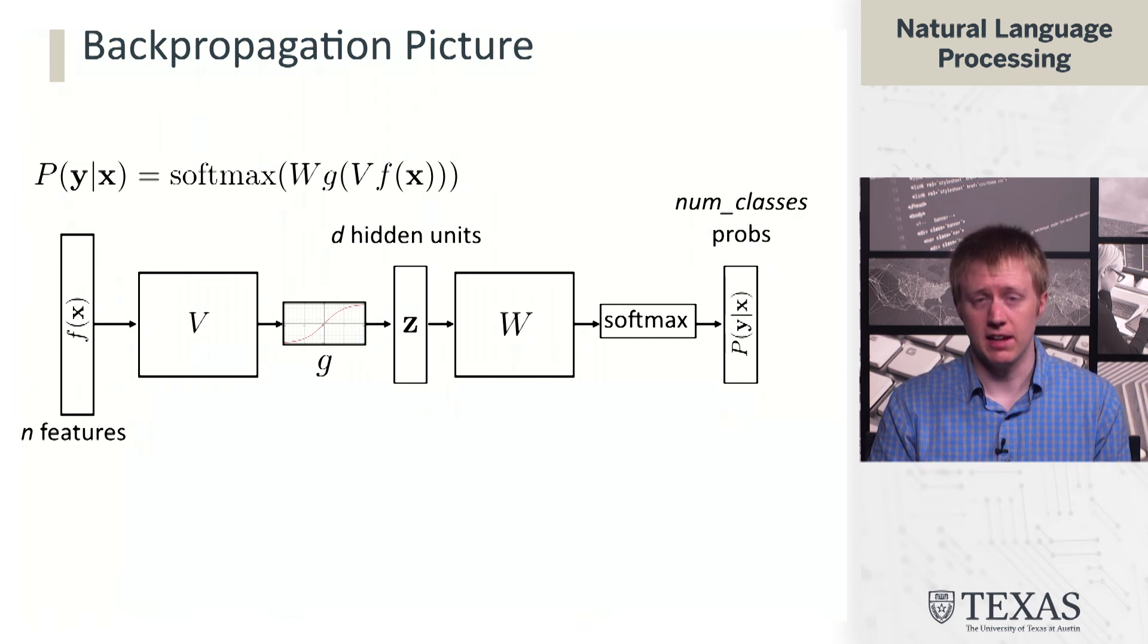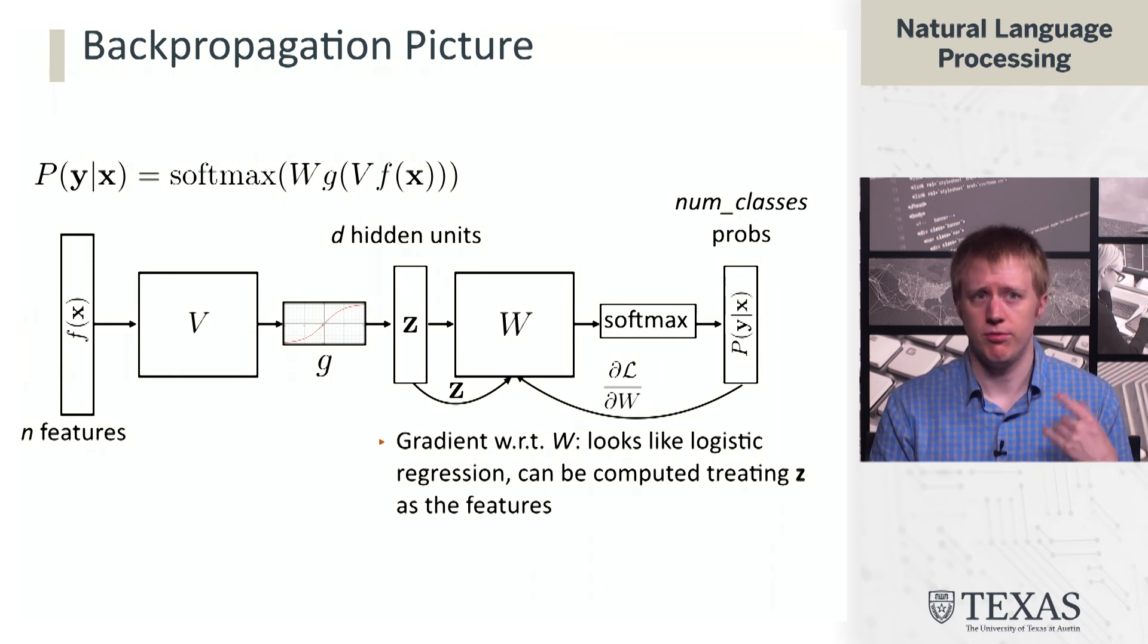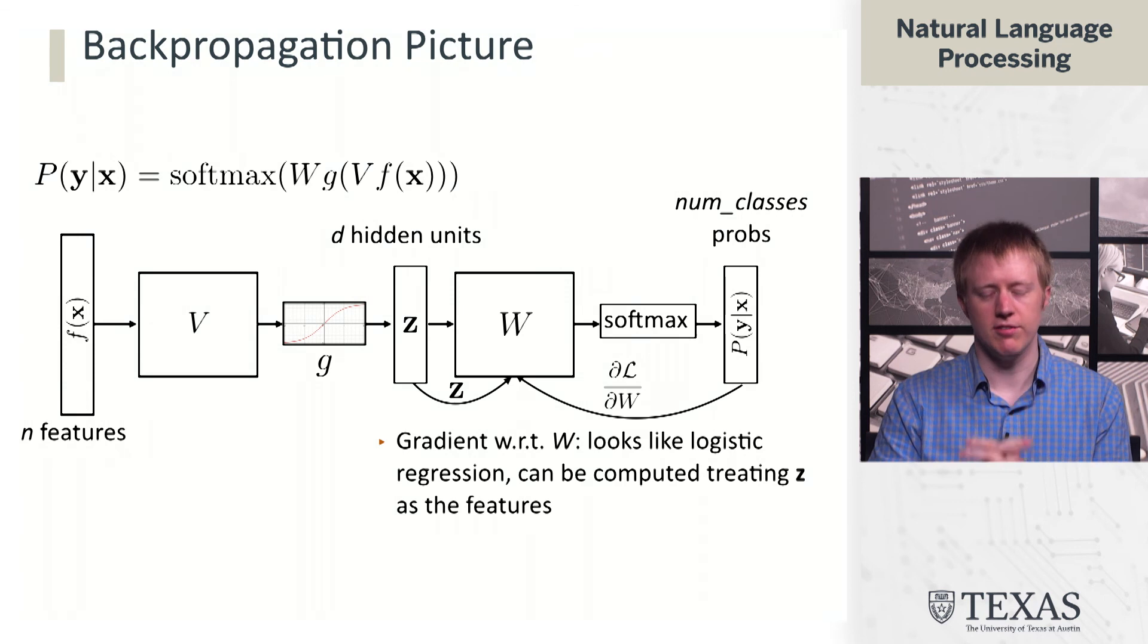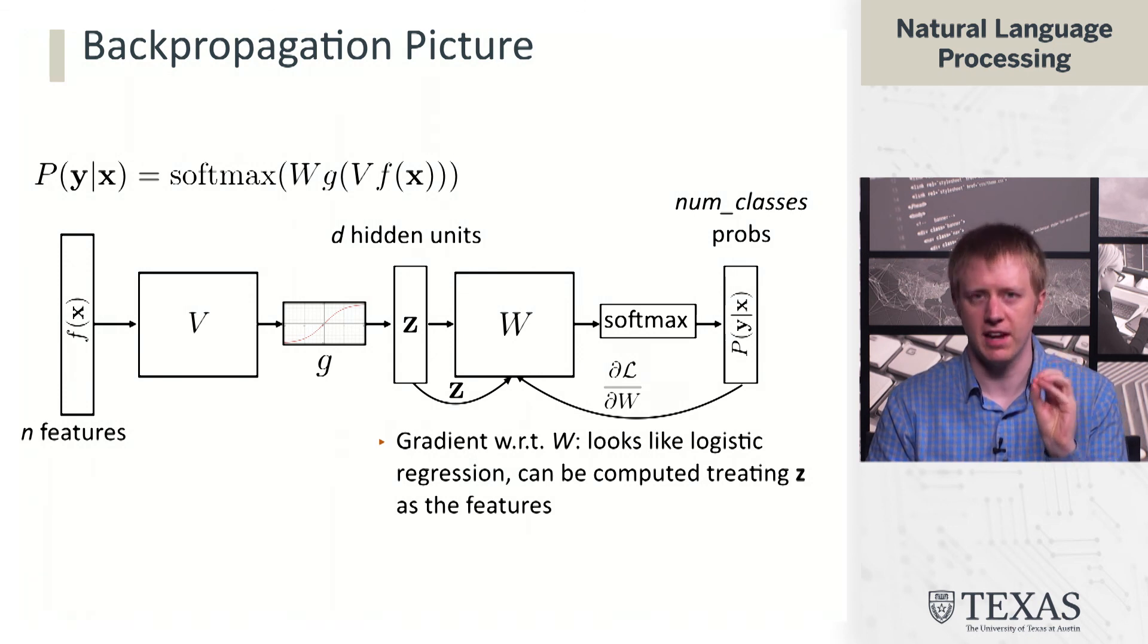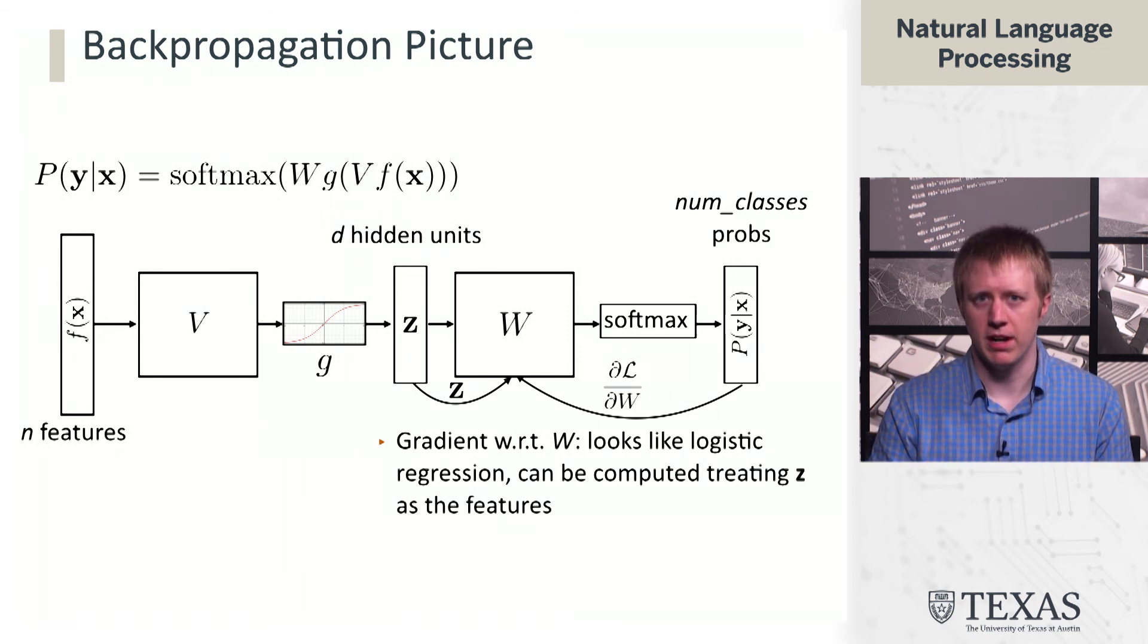The fact that it looks exactly like multi-class logistic regression means we can think about computing the gradients of W exactly as before. Once we compute the z's, we don't really have to think about them anymore. We can compute gradients of W and the loss and treat it exactly like multi-class logistic regression, even from the standpoint of computing gradient updates. This is the top layer of the network, the one closest to the output.